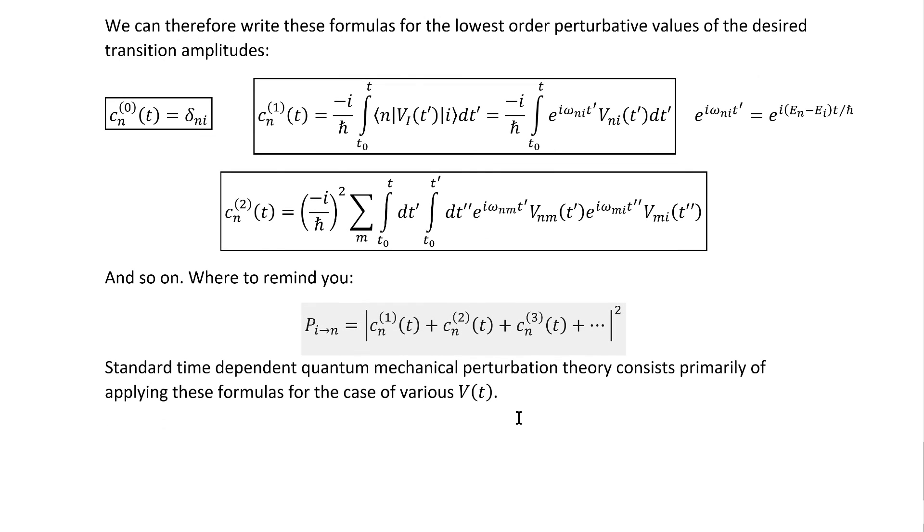Standard time-dependent quantum mechanical perturbation theory, as you'll find it in all the quantum textbooks, basically consists of calculating these C quantities and then squaring them to get the probabilities, all for various different cases of V(t) that either come to you in homework problems or out of a research context. And with that, we're done. I hope this video was interesting. Thanks for watching.